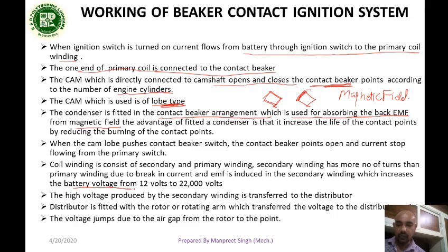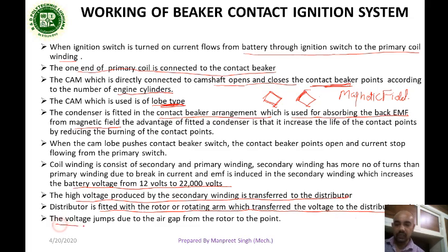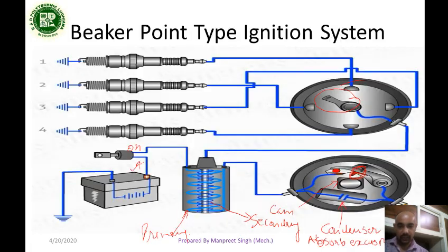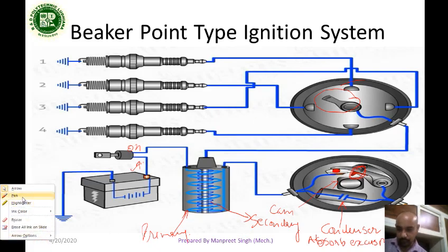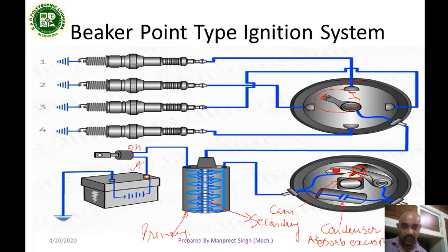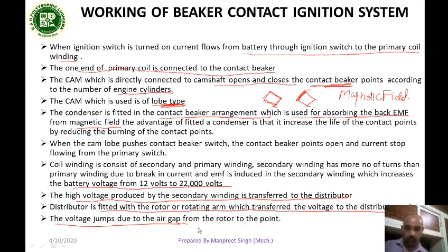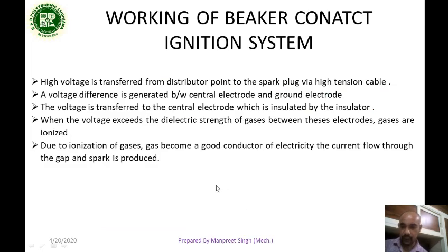This increases the battery voltage from 12 volts to 22,000 volts. The high voltage produced by the secondary winding is transferred to the distributor. The distributor is fitted with a rotor or rotating arm which transfers the voltage to the distributor points. The voltage jumps due to the air gap from the rotor to the distributor points.